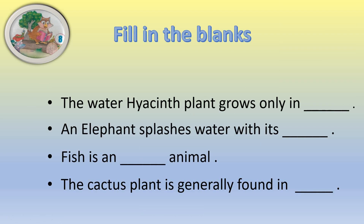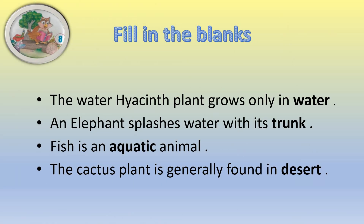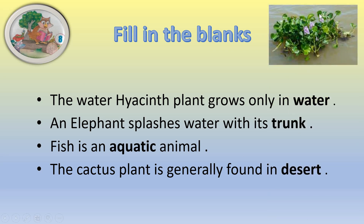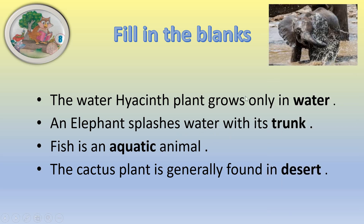Now we will be discussing the fill in the blanks. First: the water hyacinth plant grows only in blank. Second: an elephant splashes water with its blank. Third: fish is a blank animal. Fourth: the cactus plant is generally found in blank. The answers are: the water hyacinth plant grows only in water — you can see in the picture it grows only in water. An elephant splashes water with its trunk.